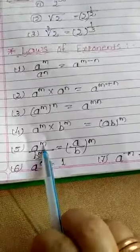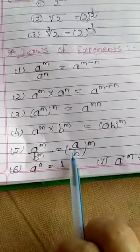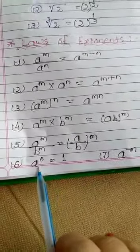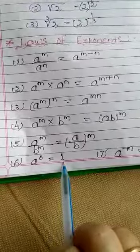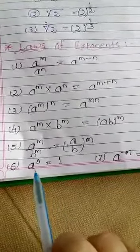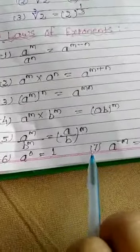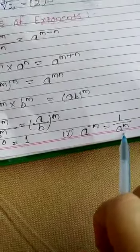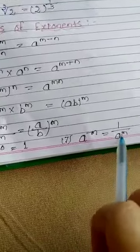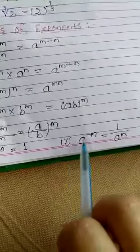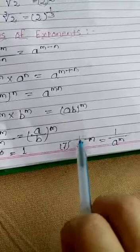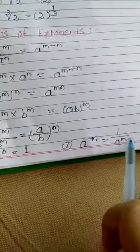Fifth law: power is same and bases are divided, so we divide the bases and keep the whole power. Sixth law: a to the power 0 equals 1 — any base with power 0 gives result 1. Any number, whatever base you have, if the power is 0, then result equals 1. Last law: a to the power minus m equals 1 upon a to the power m — if any base has a negative power, then we write 1 upon that, making the power positive.